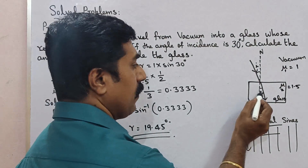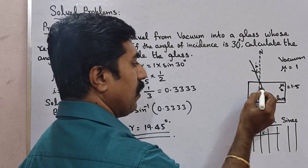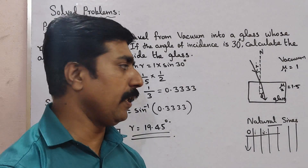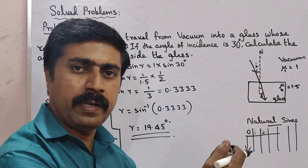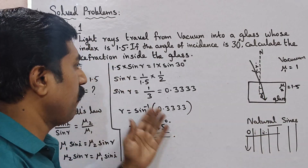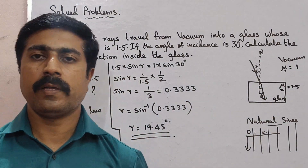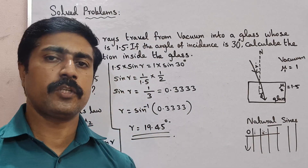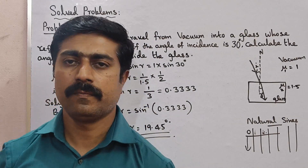So the angle of incidence is 30 degrees and the angle of refraction is 19.45 degrees. This is a very important but simple problem. Please share with your friends. All the best, thank you.